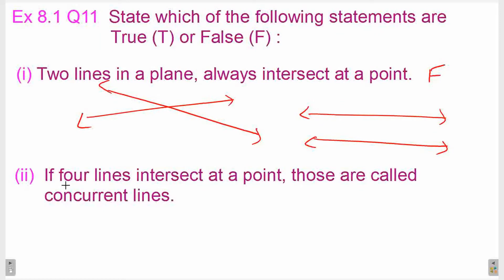Second statement: if four lines intersect at a point, those are called concurrent lines. So if we have such four lines and they intersect at a point, we call these concurrent lines. Therefore, this statement is true.